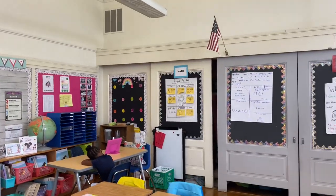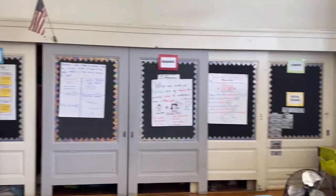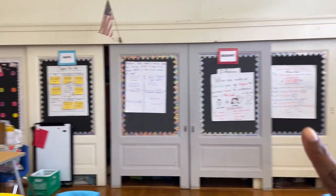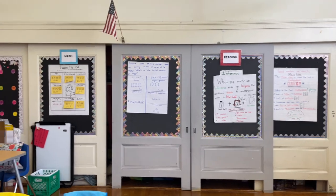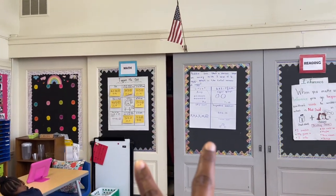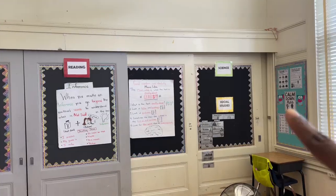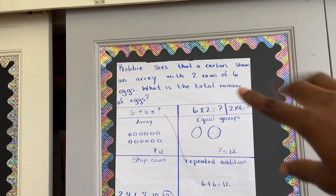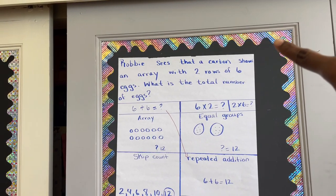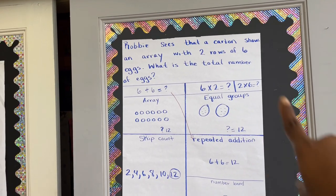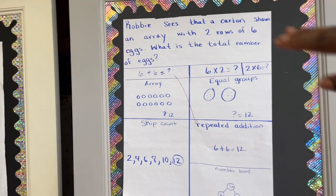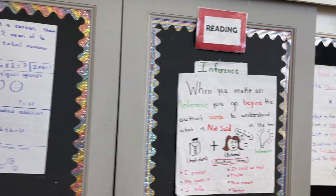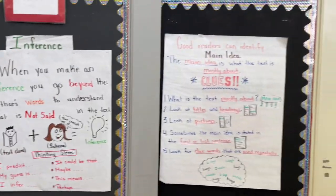So back here, initially these boards are blank, and any anchor charts that I post I will use these boards back here. For math, these two are for math. These two are for reading. And then for my science and social studies words, I'll put them on display here. So here I have just an example for math — we have the word problem at the top, and then I'm showing them the different strategies they can use to solve the problem along with a number sentence that they can write. And the anchor chart for reading is focusing on inference and main idea.